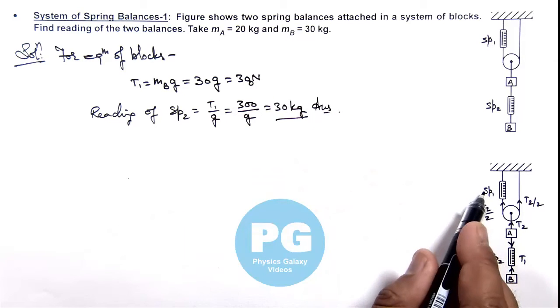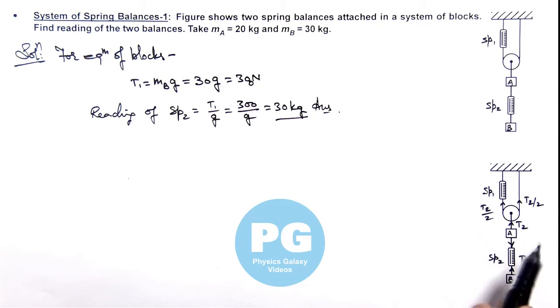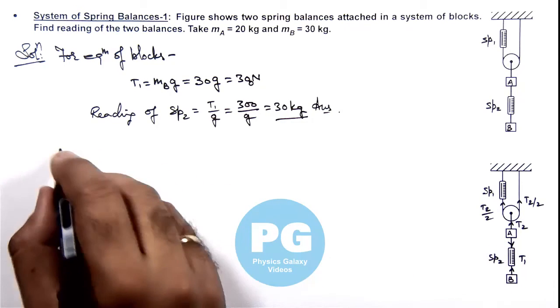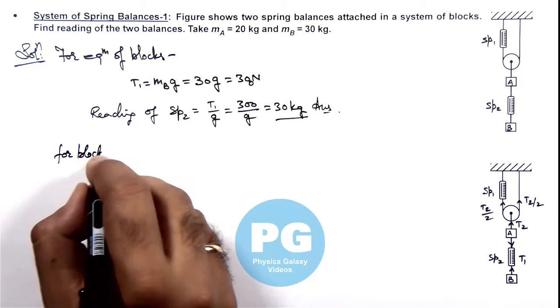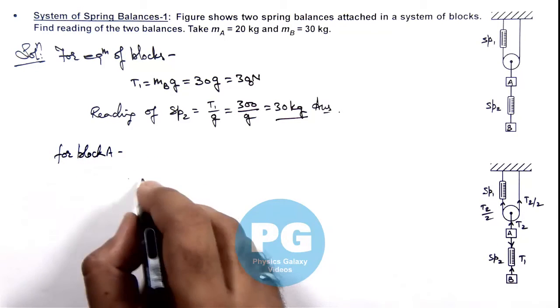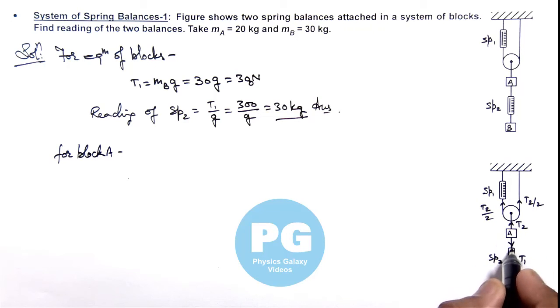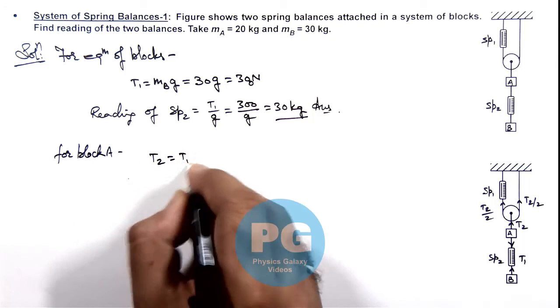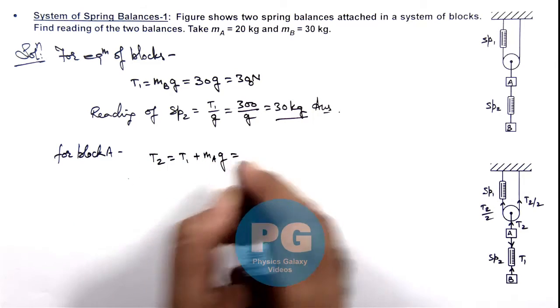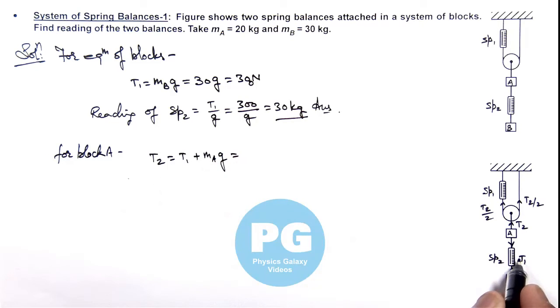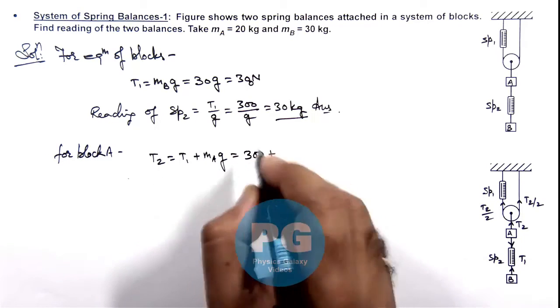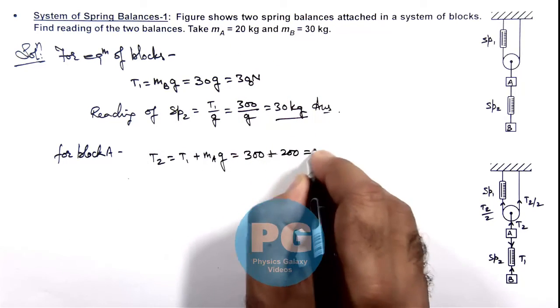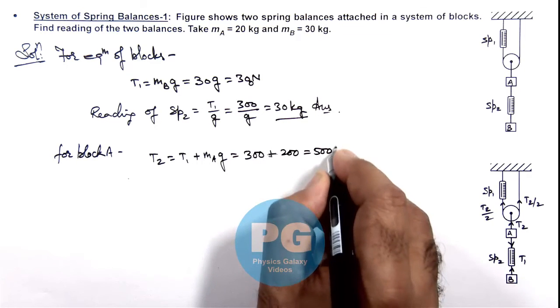And for spring balance 2 we need to calculate the value of tension T2. So now we can write for block A. Here we can see in upper direction it is T2 and downward it is T1 plus its weight. So we can write T2 is equal to T1 plus m_A g. Here the value of T1 we already calculated as 300 newton plus mass of block A is 20 kg so this is 200. So the value we are getting for tension T2 is 500 newton.